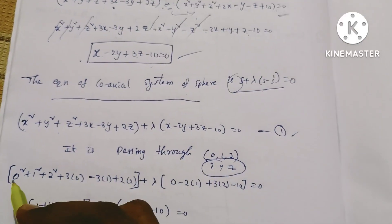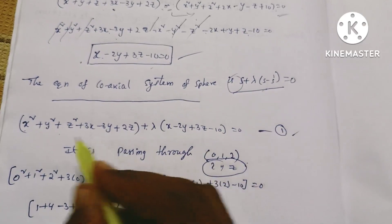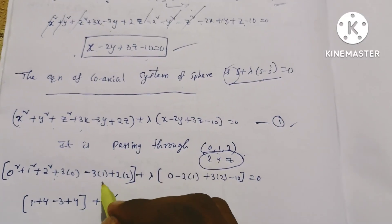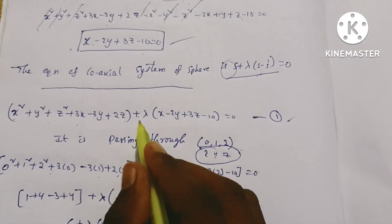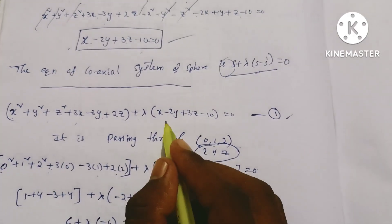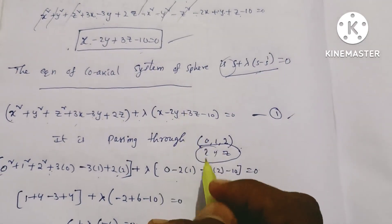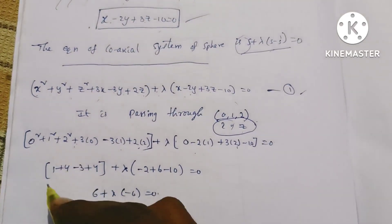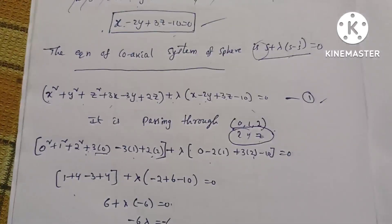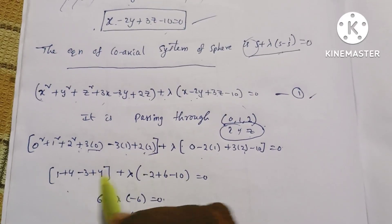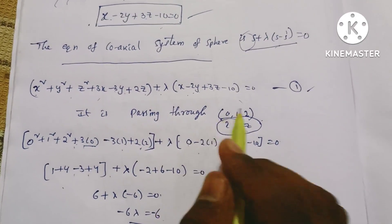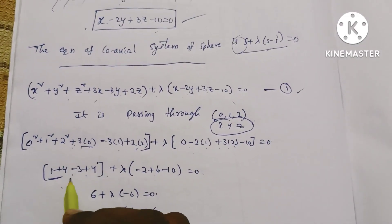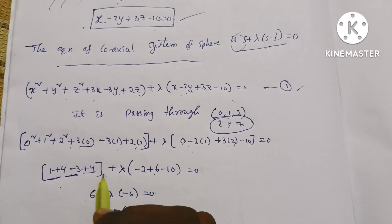Substituting: X squared equals 0, Y squared equals 1, Z squared equals 4. Then 3X equals 0, minus 3 into Y into 1 equals minus 3, plus 2 into Z into 2 equals plus 4. Plus lambda into: X into 0 minus 2Y into 1 minus 2, plus 3Z into 2 equals 6, minus 10 equals 0. So: 0 plus 1 plus 4 equals 5, minus 3 plus 4 equals 6, plus lambda into (minus 2 plus 6) equals 4, minus 10.